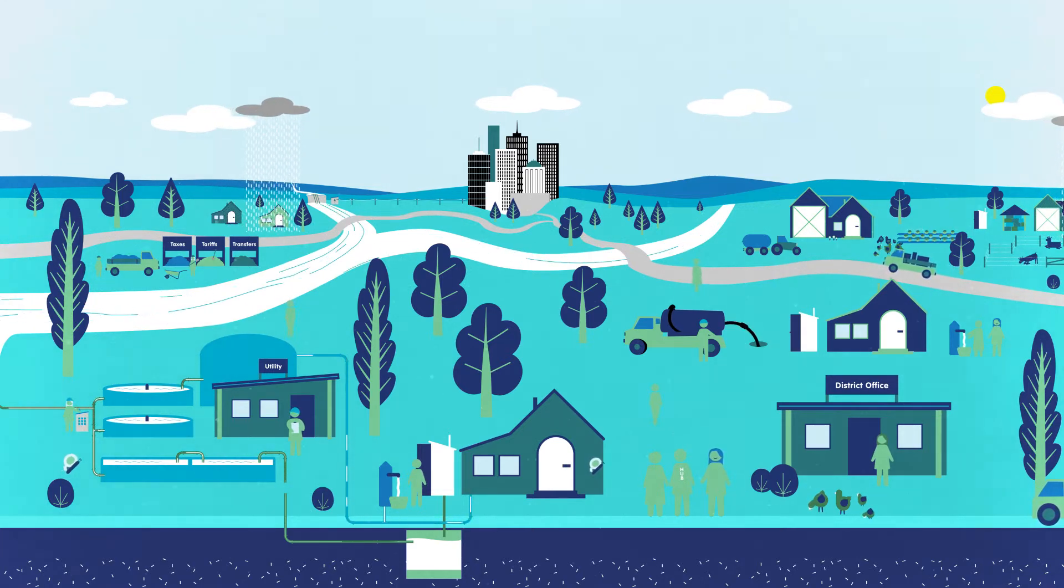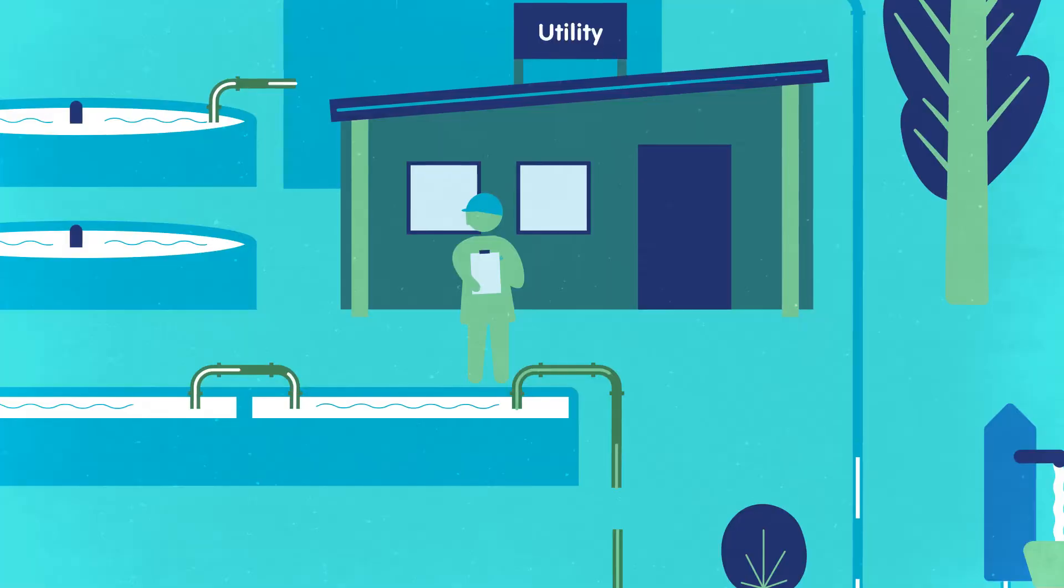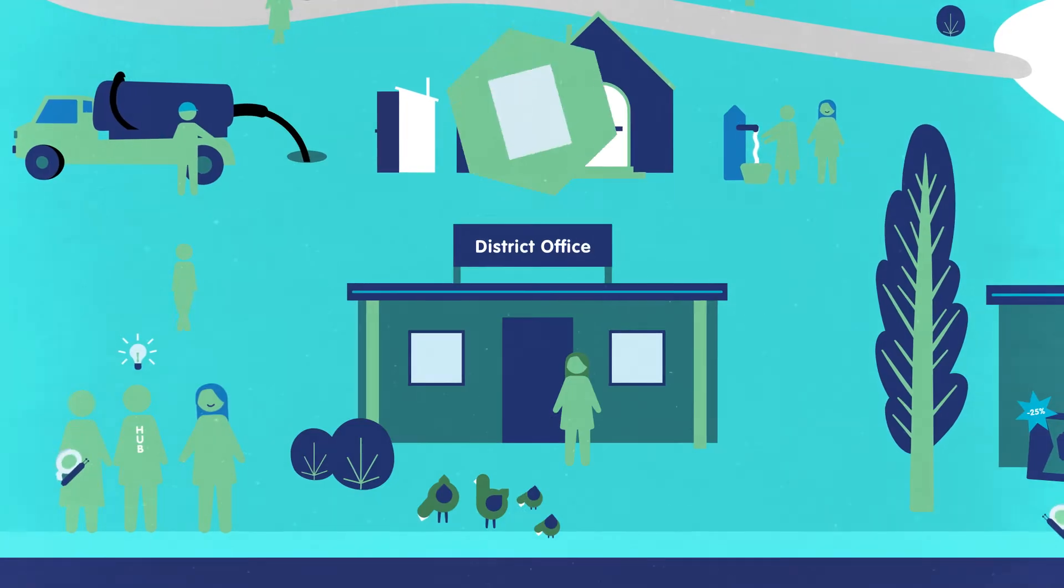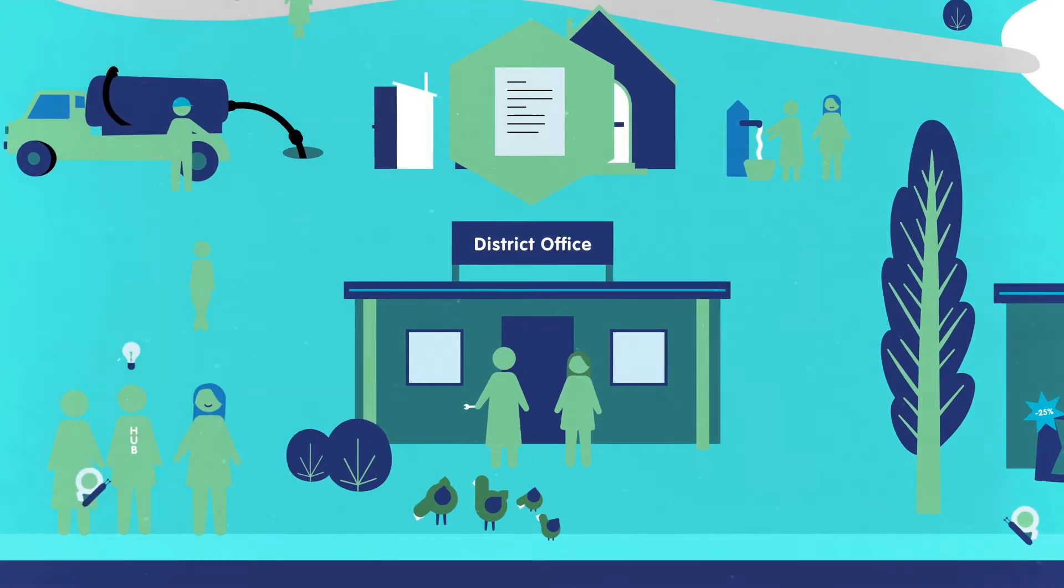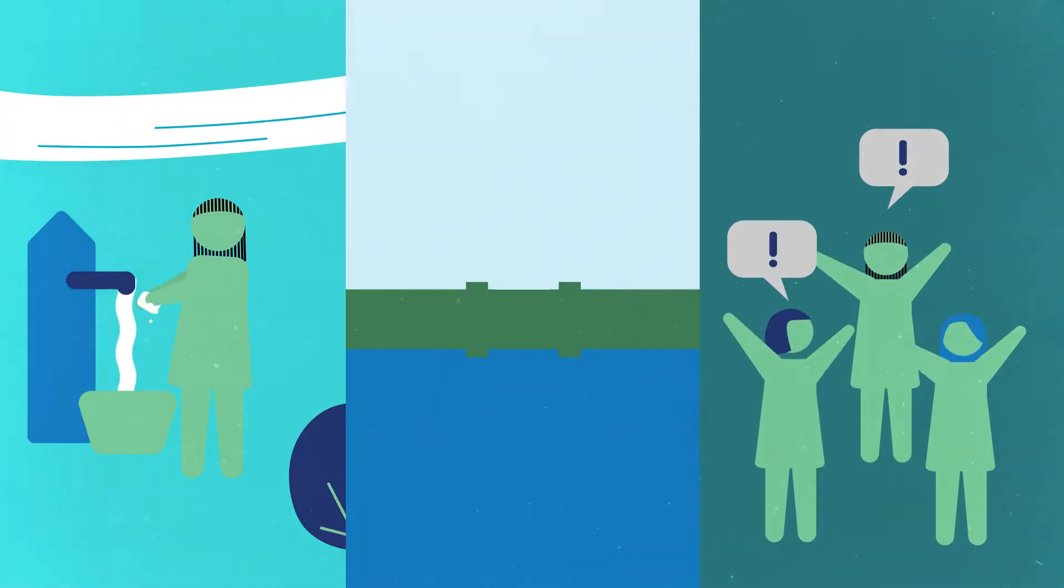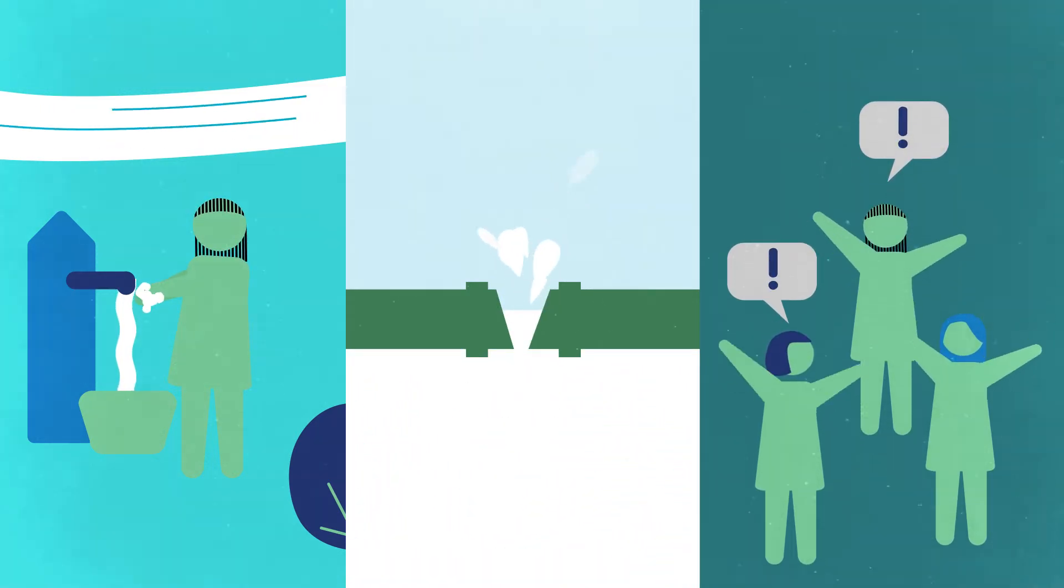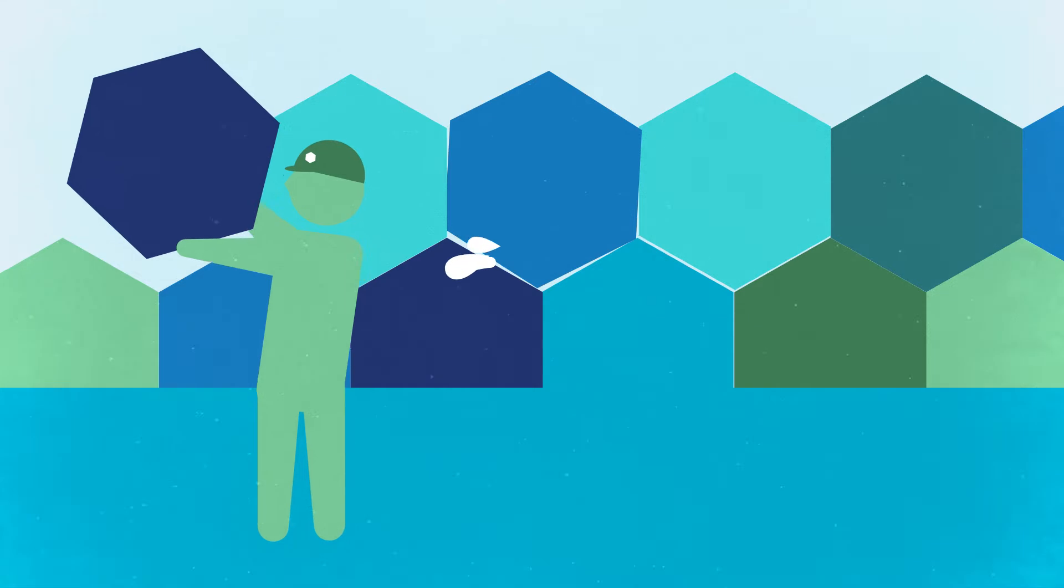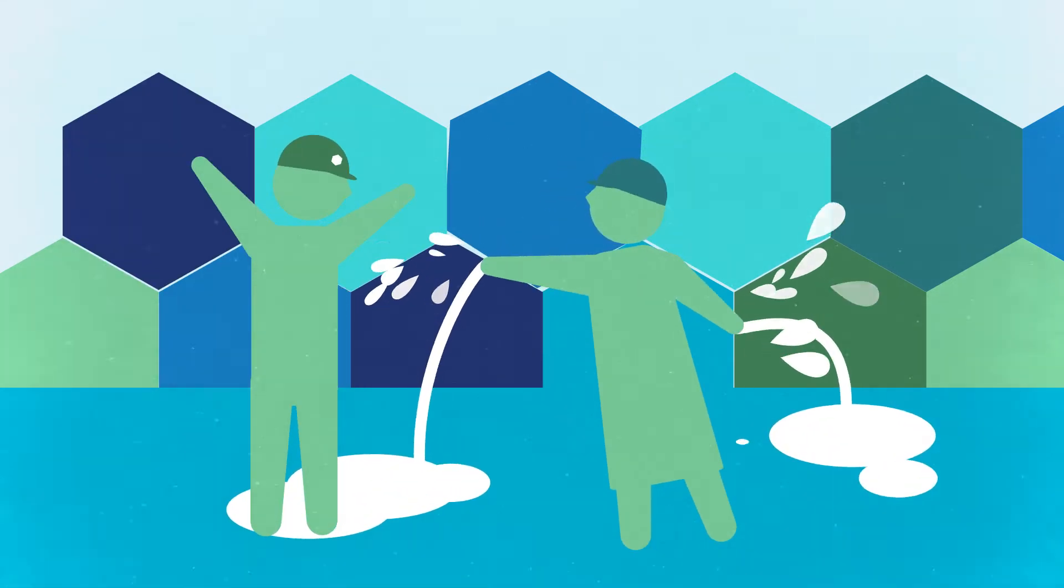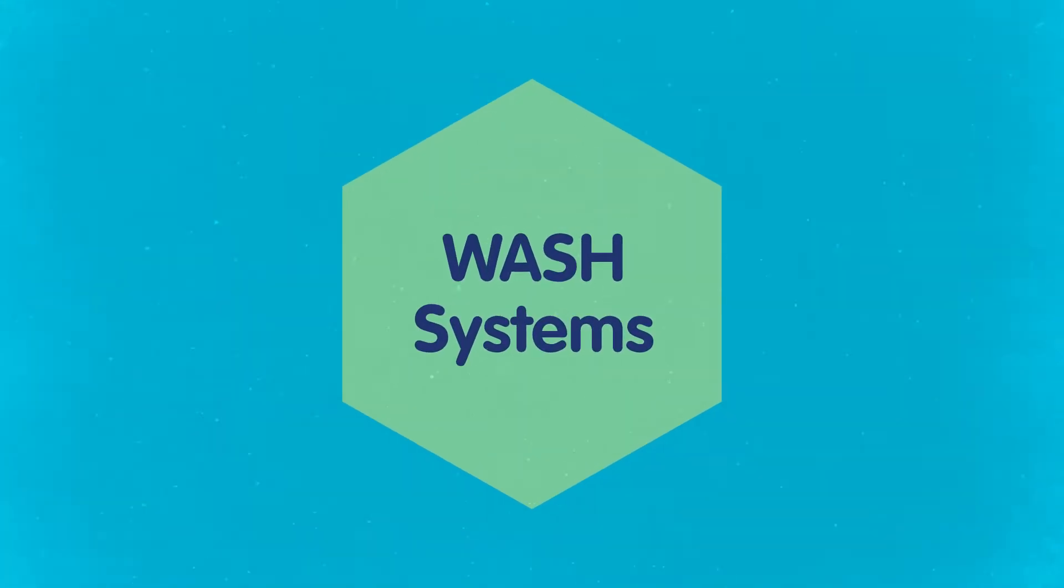Behind every service is a complex network of actors, factors and links that connect them. This includes everything from regular monitoring of service levels to sound government policies, skilled hand pump mechanics and the finance to make it happen. For water, sanitation and hygiene services to be resilient in the face of inevitable challenges and changes, we need to open our eyes to the bigger picture and to commit to ways of working better together. In other words, we need a strong system.